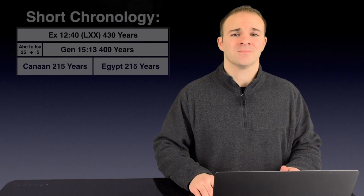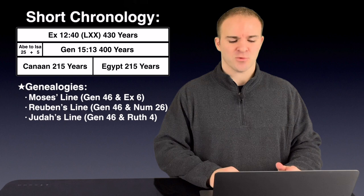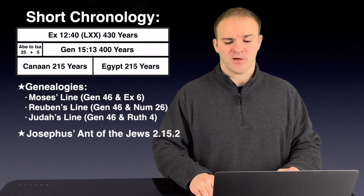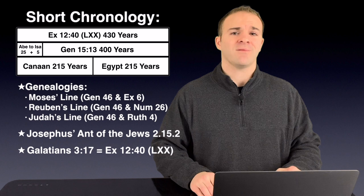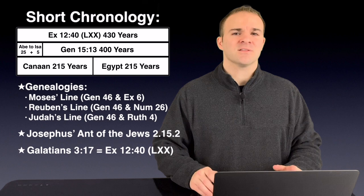Pretty impressive proposal, right? They have the chronologies working together. They have genealogies with only two and three generations between going in and out of Egypt. They got Josephus backing them up. And even seems to have Paul agreeing with them that the Septuagint is the correct reading by having Canaan including with Egypt in Exodus 12:40. So, how does the longer proponent respond to all of this?